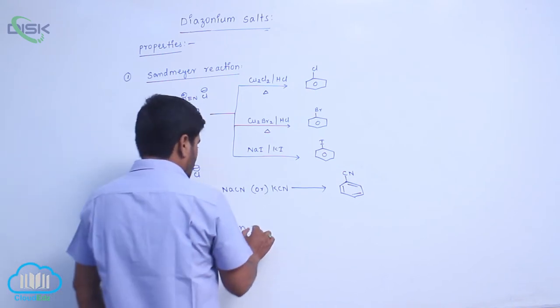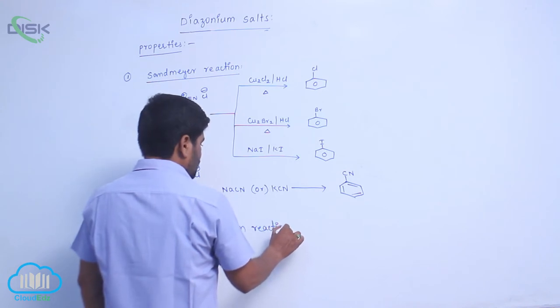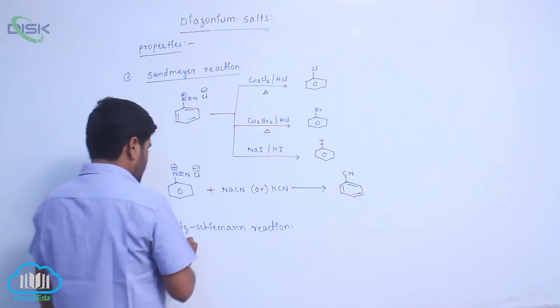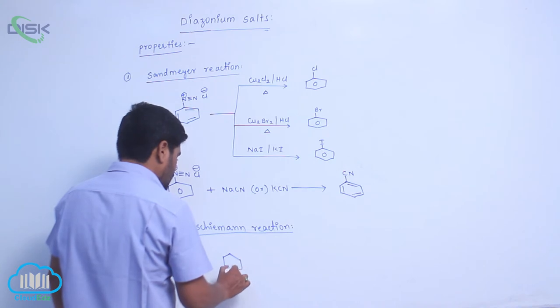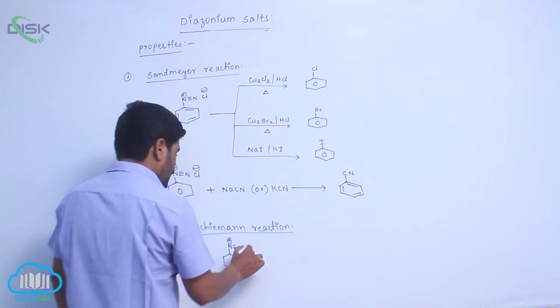Next, third one is Balz-Schiemann Reaction. When benzene diazonium chloride, N triple bond N with Cl minus,